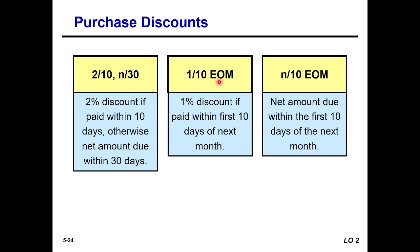Another credit term: 1/10 EOM means 1% discount if paid within the first 10 days of the next month. N/10 EOM means the net amount is due within the first 10 days of the next month.